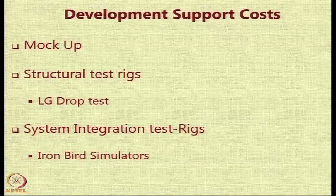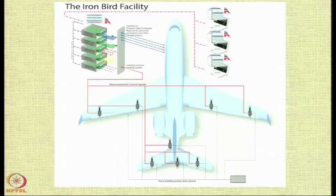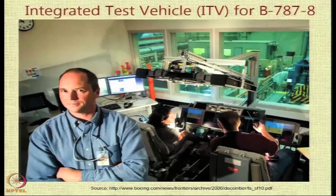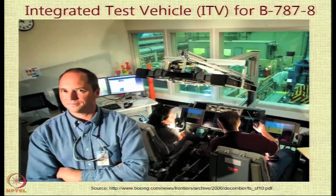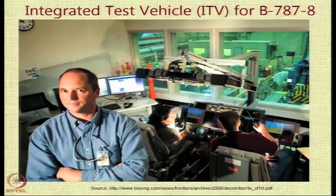Then you have ironbird simulators where the whole system is integrated. All actuators, bought-out items, and accessories are put together, and on the ground you test the functioning of the aircraft under various loads and operating conditions. This is a facility where data regarding the performance of the various actuators and systems is recorded on the ground, simulating the working of the aircraft. Boeing has developed an integrated test vehicle, the ITV 787-8, and information on this ironbird simulator will be shared in the reading material.